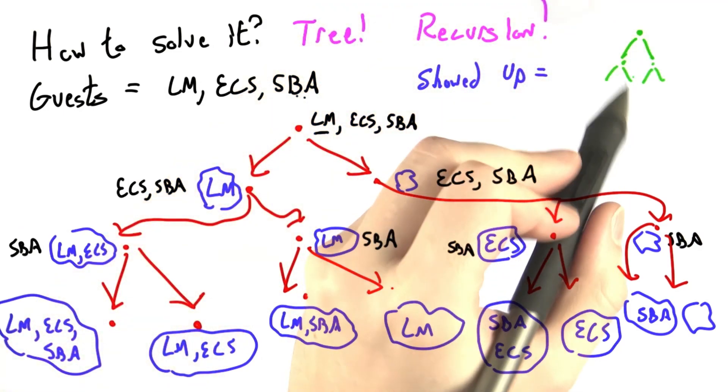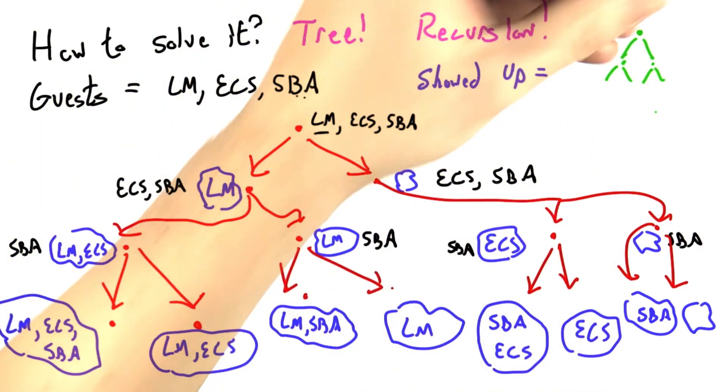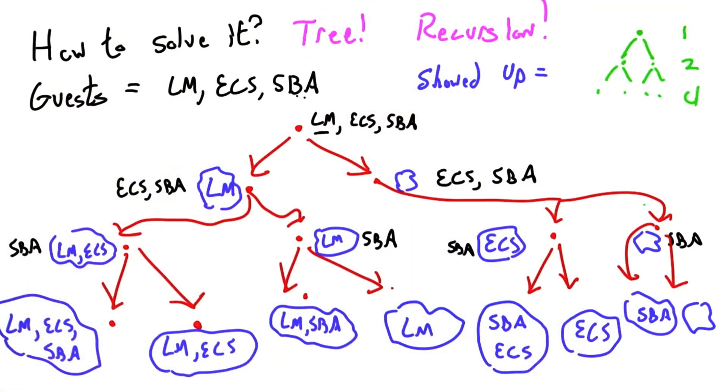In this tree, every time we go down a level, every time we consider another guest, we have two branches. So the size of the tree doubles each time, which is just what we reasoned about before.